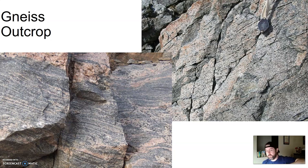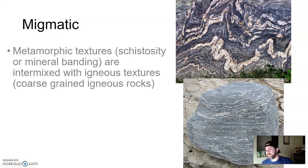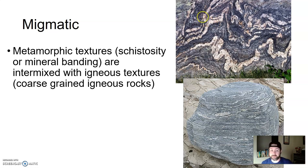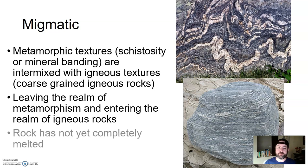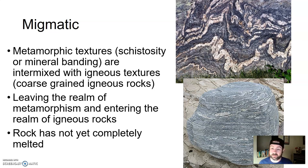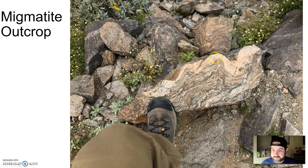As we continue to apply heat and pressure, we get something called migmatic texture. Migmatic texture is where you get schistosity and mineral banding mixed with igneous textures, because you're starting to leave the realm of metamorphism and entering the realm of igneous rocks — a little too much heat and pressure. The rock has not completely melted yet, but it's getting there; any more and this whole thing would be melted and we'd be back into the realm of igneous rocks. A type of metamorphic rock that has migmatic texture is migmatite. Here's a migmatite outcrop — you can see the veins going through this rock type. This was over in the Appalachian Mountains. Metamorphism bordering on too much heat and pressure, almost melting again.